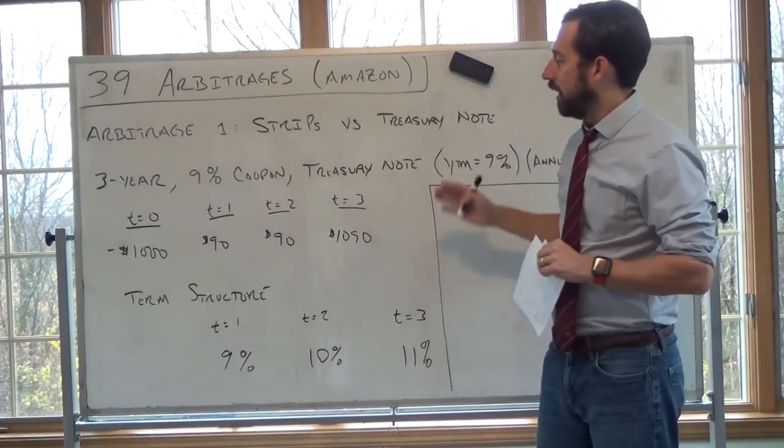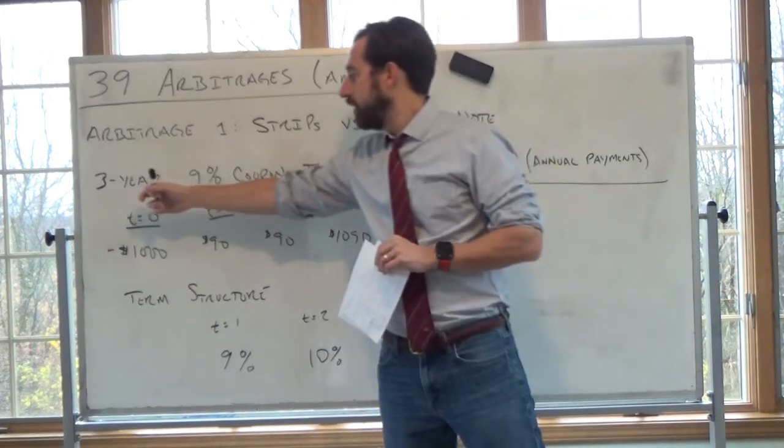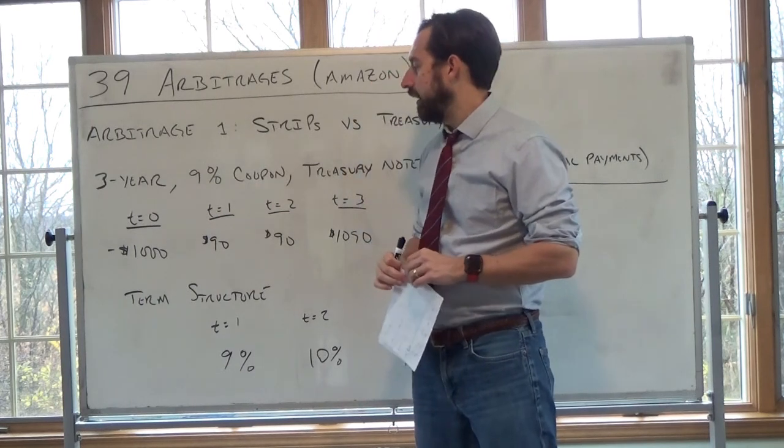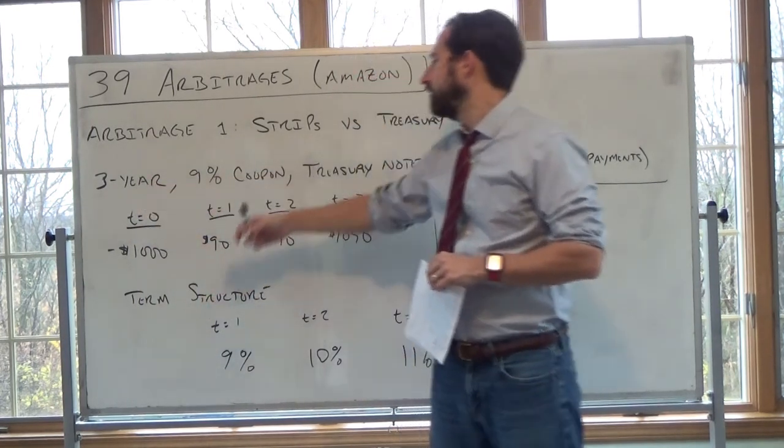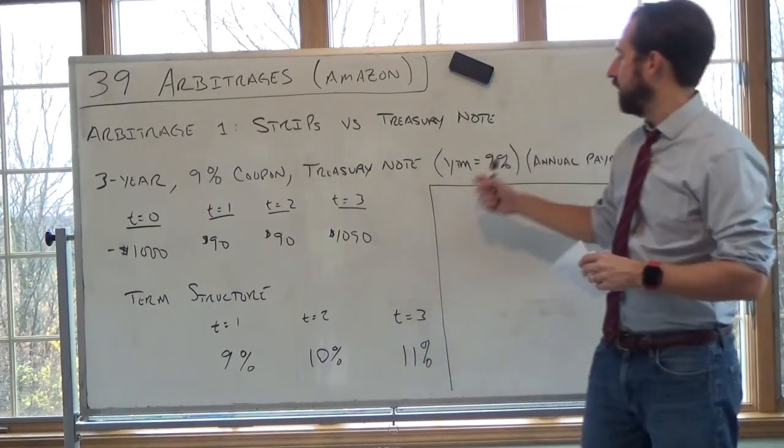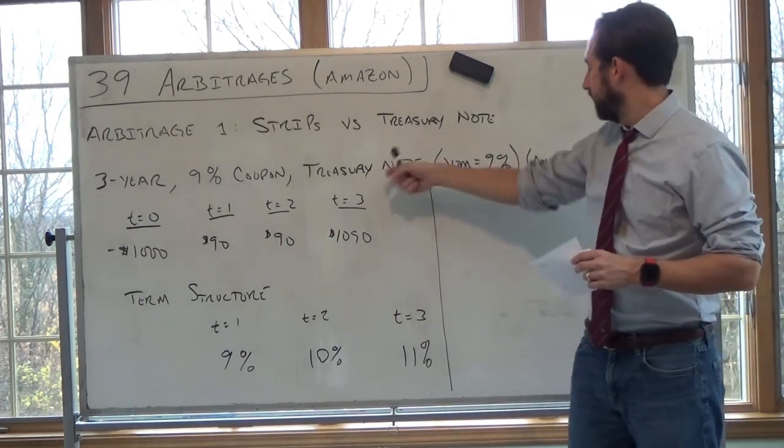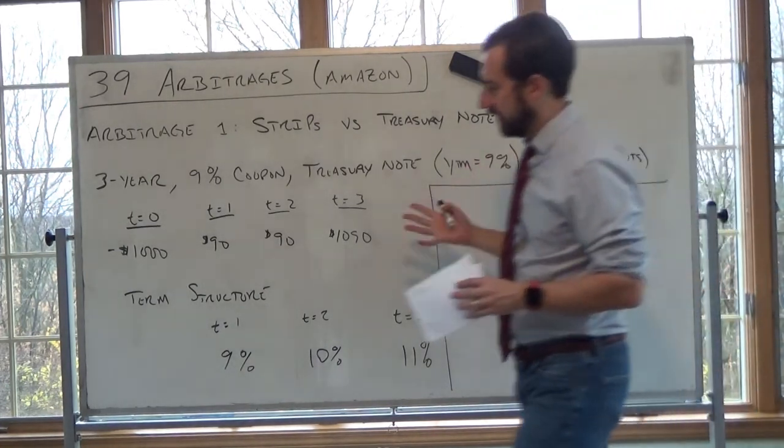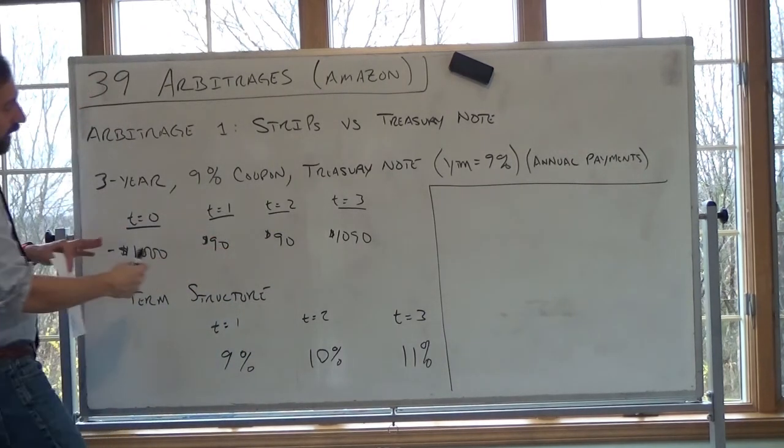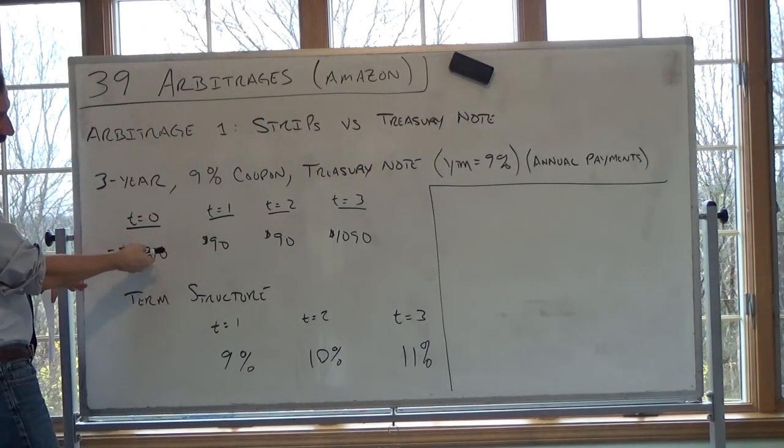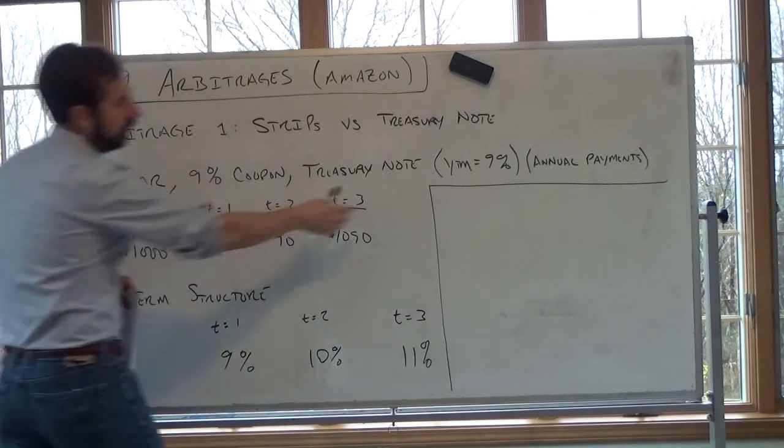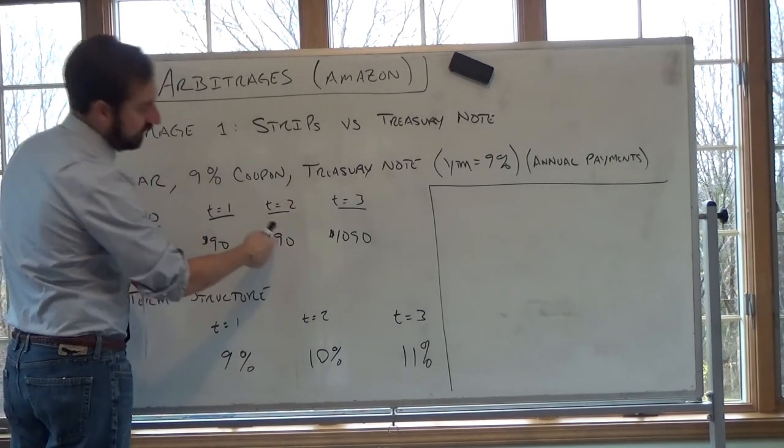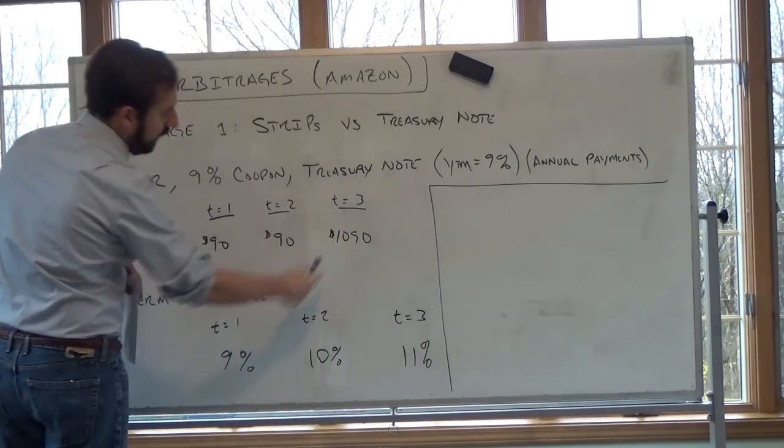So let's say, to set the stage, there's a three-year treasury bond that's just issued today by the treasury. So it's three years, 9% coupon, but because it's issued today, also yield to maturity of 9%. So this is a treasury note. And for simplicity, we'll just say annual payments. So the idea of this is, this bond will cost $1,000 at time zero, 9% coupon, 9% yield to maturity. And it will pay $90 in time one, $90 in time two, year two, and $1,090 in year three.